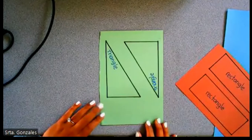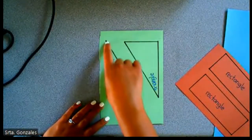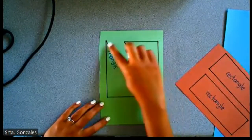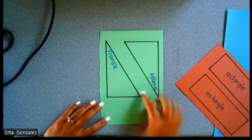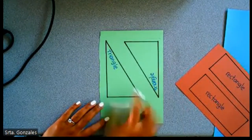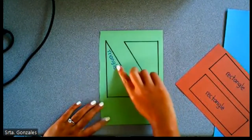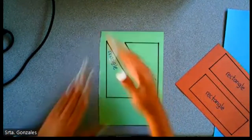Triangles have three sides. Long side, long side, short side. Write triangle where the two long sides meet.